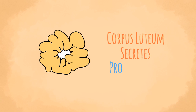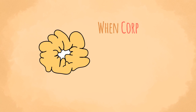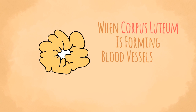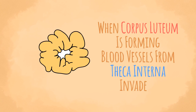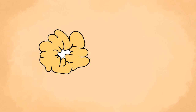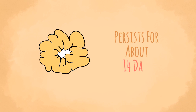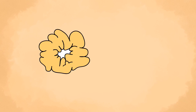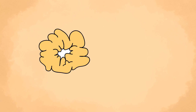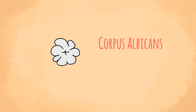The corpus luteum secretes progesterone, which must be poured into the blood. Thus, when the corpus luteum is forming, blood vessels from the theca interna invade it and provide a rich blood supply. If the ovum is not fertilized, the corpus luteum persists for about 14 days, during which it secretes progesterone. It remains relatively small and is called the corpus luteum of menstruation. At the end of its functional life, it degenerates and forms a mass of fibrous tissue called the corpus albicans, or white body.